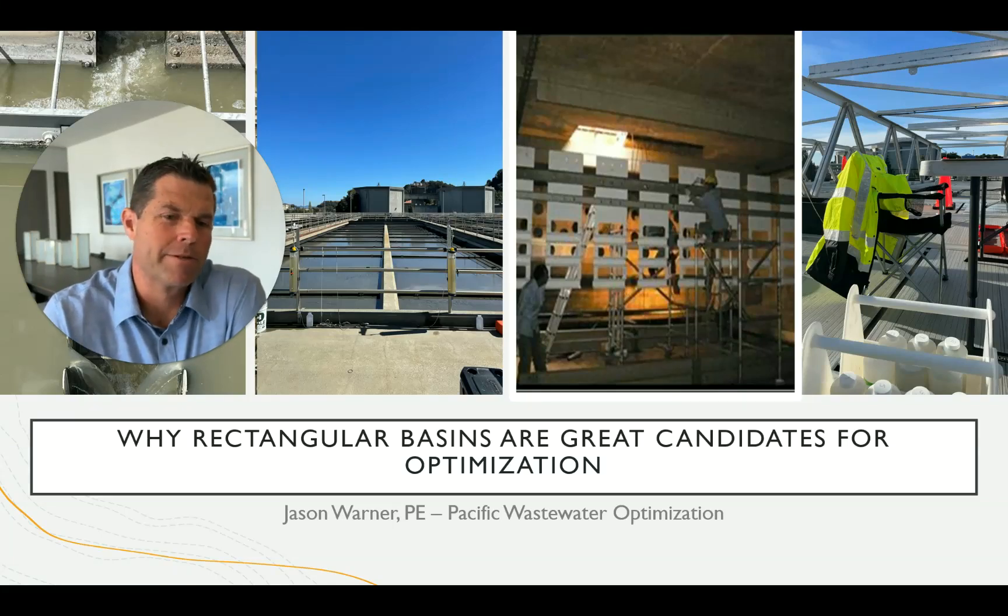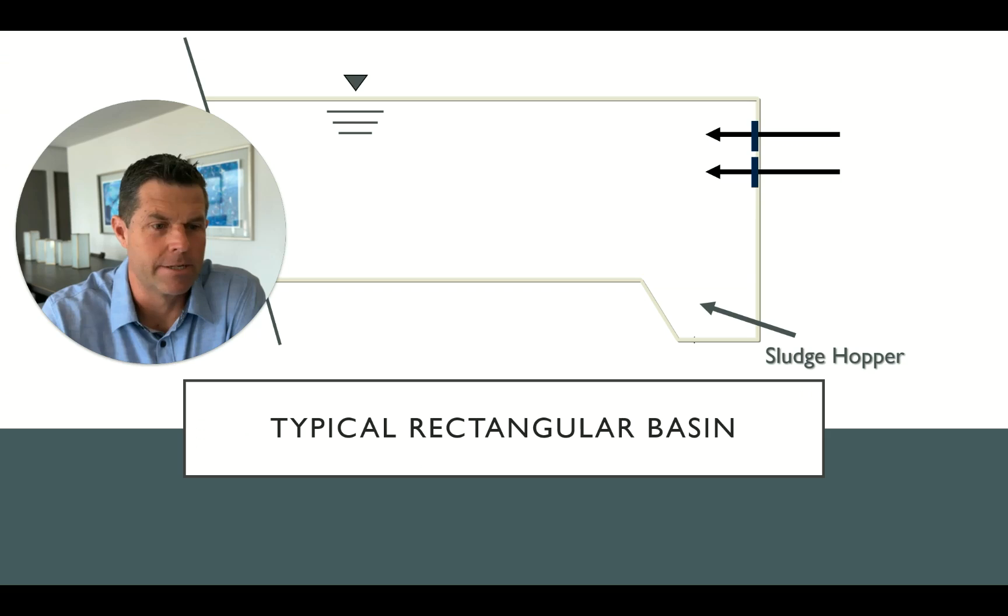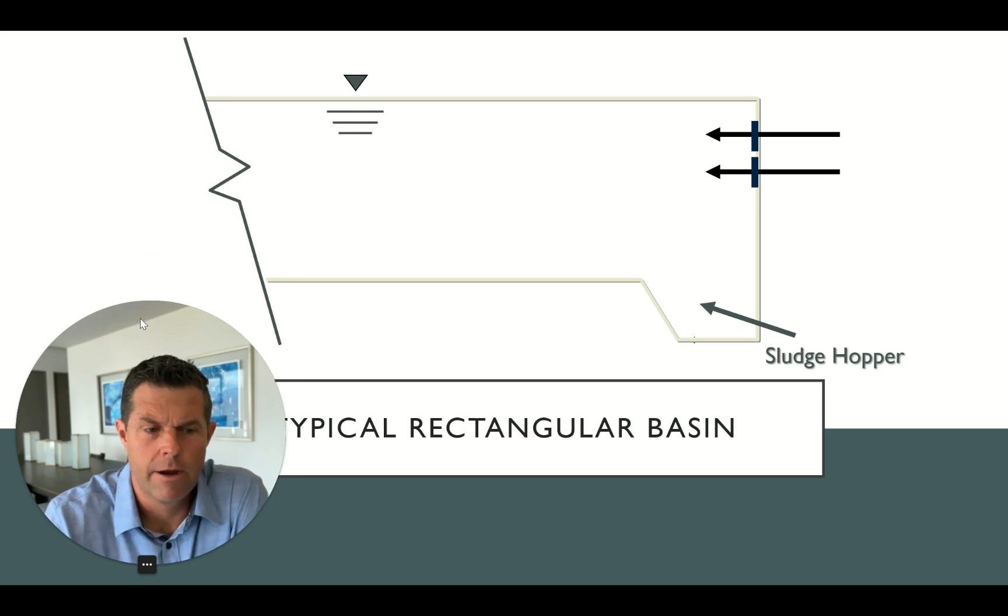Hi, this is Jason Warner from Pacific Wastewater Optimization. Today we're going to talk about why rectangular basins are great candidates for optimization. I want to start with a typical cross-section from a rectangular clarifier. Here we have the inlet gates. Sometimes there's a target baffle mounted in that inlet, which can introduce a downward component into the inlet velocities, and it also tends to smash up any particles that begin to come together or that are coming in from the sewer. We actually break those particles up.